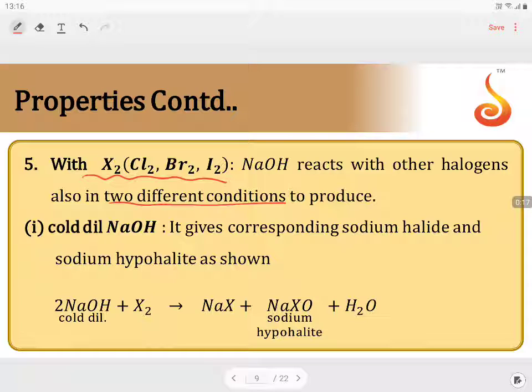If you take halogen X₂ treated with water, what will be the product formed? It will be hydrogen halide (HX) and hypohalous acid (HOX). This is the product that will be formed when X₂ reacts with water.